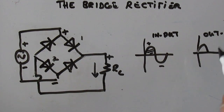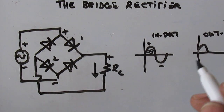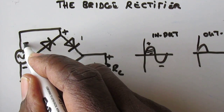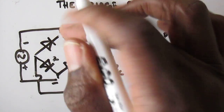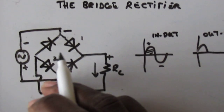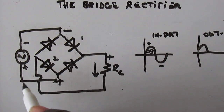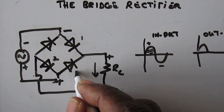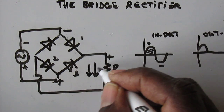During the negative half cycle the output will also be positive. During the negative half cycle, this side now becomes negative and this side becomes positive. Applying conventional current flow, current will flow from the supply up through diode number three.